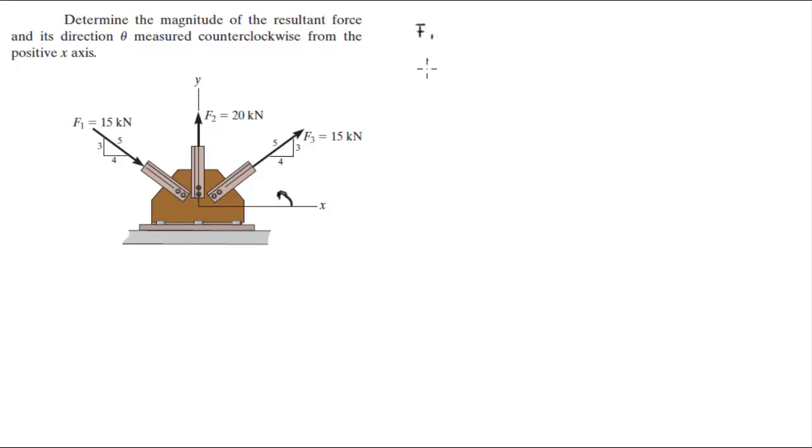F1 has an x-component and a y-component. The x-component is given by 15 times 4 over 5, and it's going towards the positive direction because it's going towards the center, and it's equal to 12.